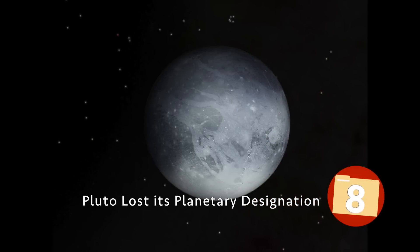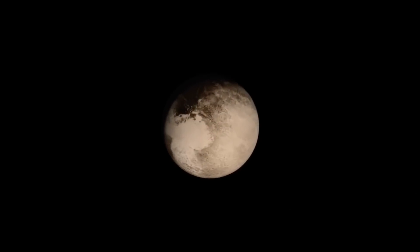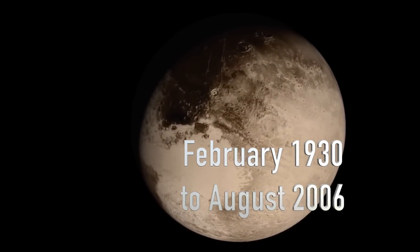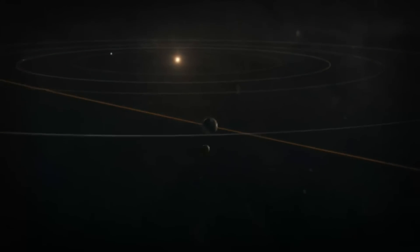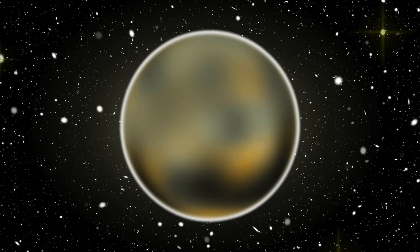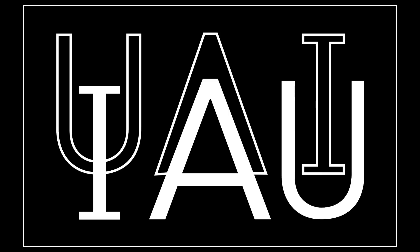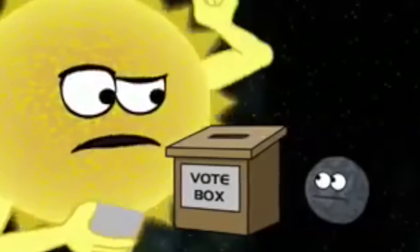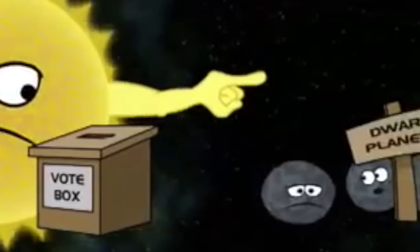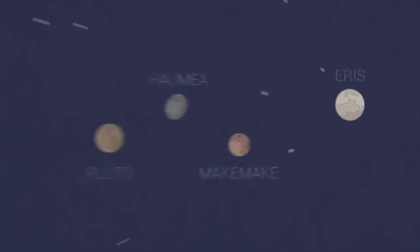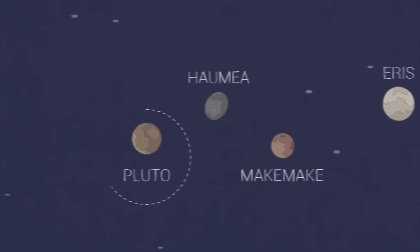Pluto Lost Its Planetary Designation. From February of 1930 to August of 2006, Pluto was able to proudly tout the title of a planet, though there were those that questioned whether the designation was ever correct. In August of 2006, it was agreed by the International Astronomical Union that Pluto no longer be considered a planet like the other eight, but rather take on the title of a dwarf planet.